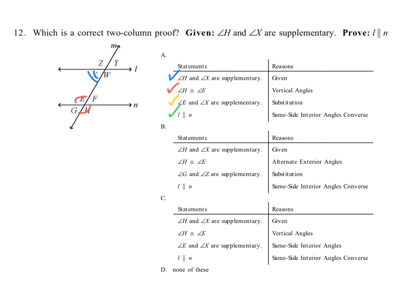That's what's going on for choice A, and everything looks good — A is the correct choice. Now we'll run through and eliminate the other options. Choice B says angle H and angle X are supplementary (given — true), but then claims angle H is congruent to angle E because they're alternate interior angles. No, they're vertical angles, not alternate interior angles, so B is not the right choice.